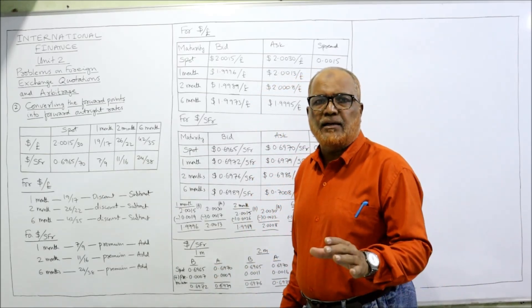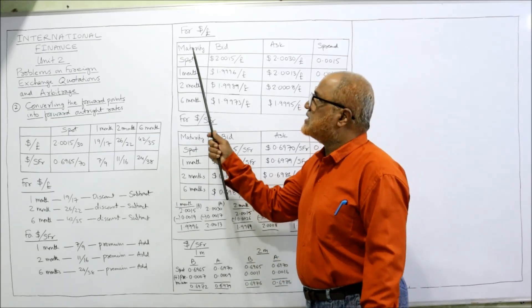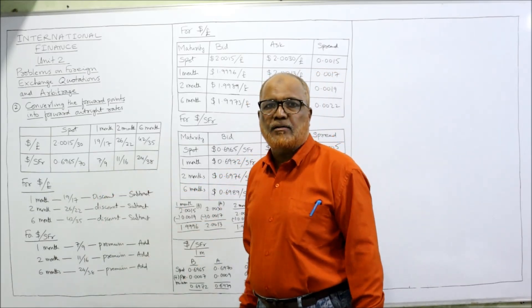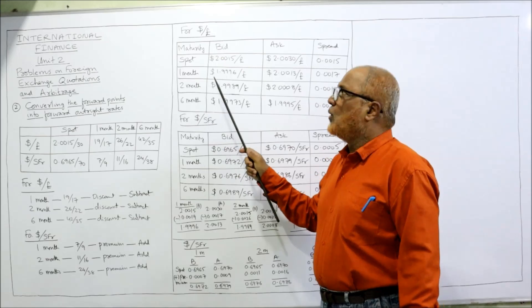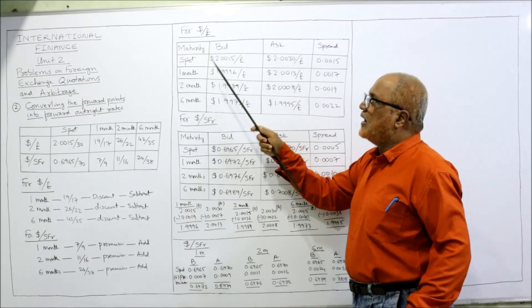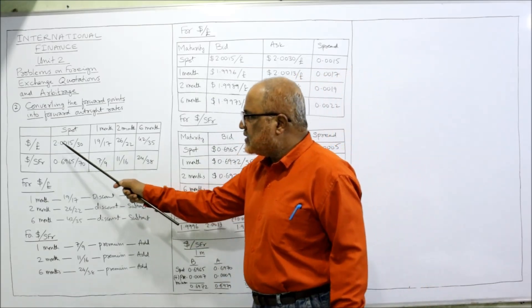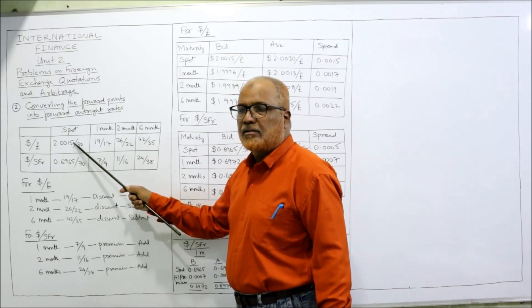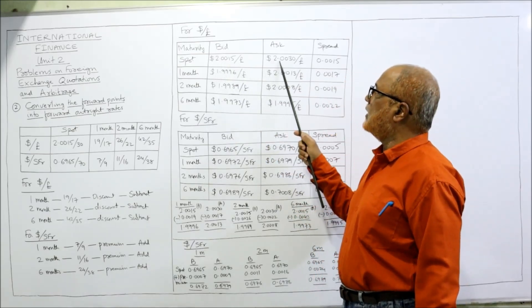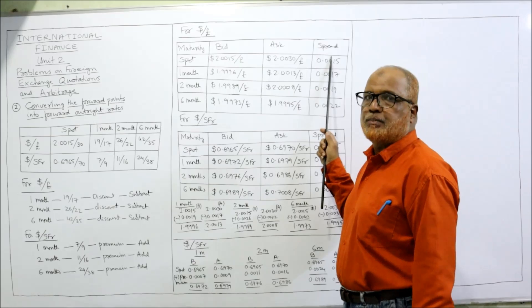Mechanically we have to either add or subtract the points. I have prepared two tables: the first for dollar per pound and the second for dollar per SFR. Each table has columns for maturity, bid rate, ask rate, and spread. For the spot rate of dollar per pound: bid rate is 2.0015 and ask rate is 2.0030.